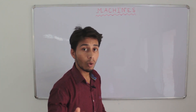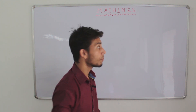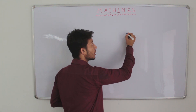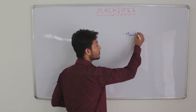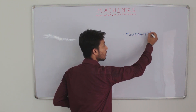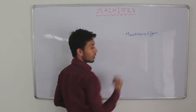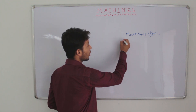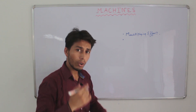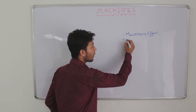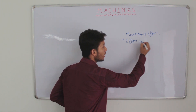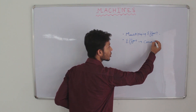How does a machine help us? Either by multiplying our effort — as in the case of a screwdriver — or by helping us overcome the load by applying our effort in a convenient direction.